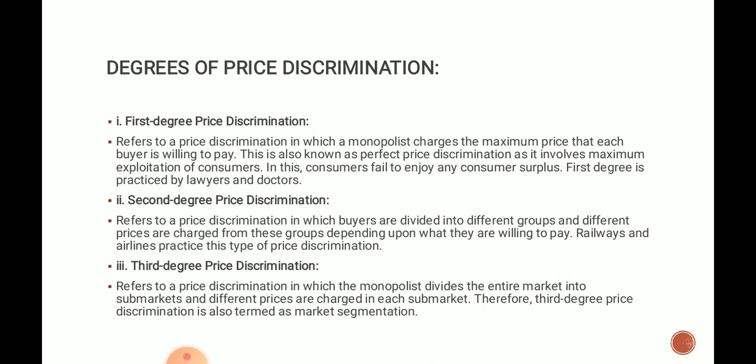Third-degree price discrimination refers to a situation in which the monopolist divides an entire market into sub-markets and charges different prices in each sub-market. It is a situation where the monopolist divides the entire market into two or three groups and charges different prices from each group. For example, a monopolist charges high prices in the home market and low prices in the foreign market. Third-degree price discrimination is also termed as market segmentation and is the most common in practice.